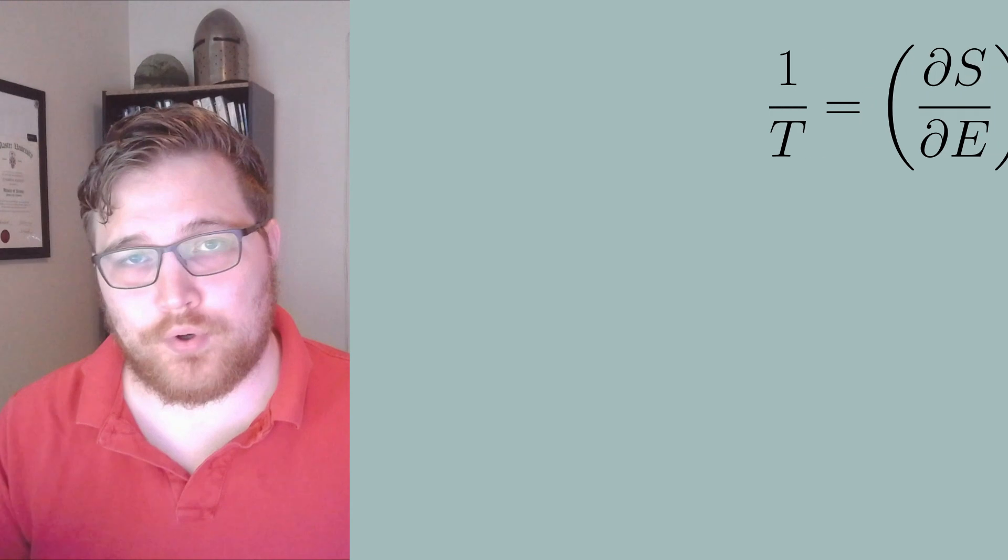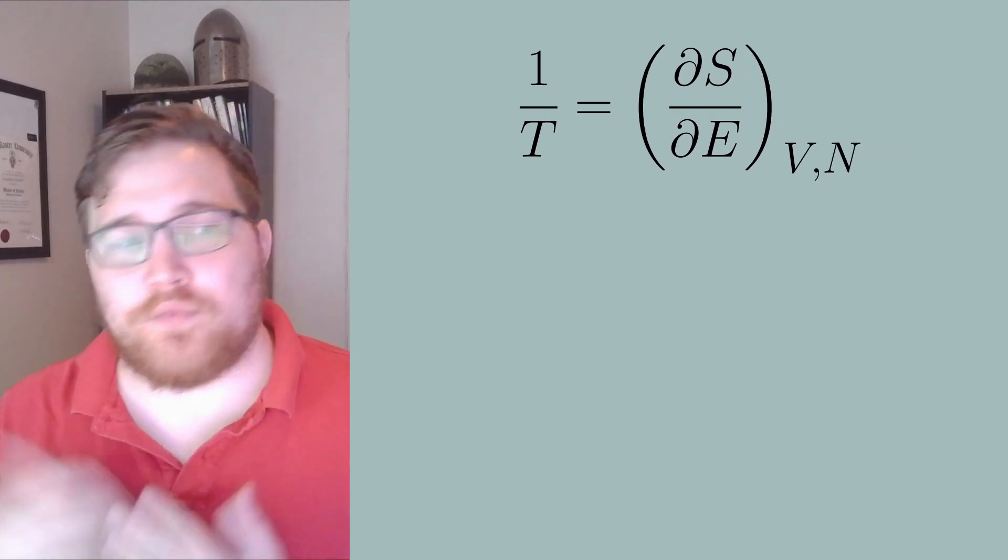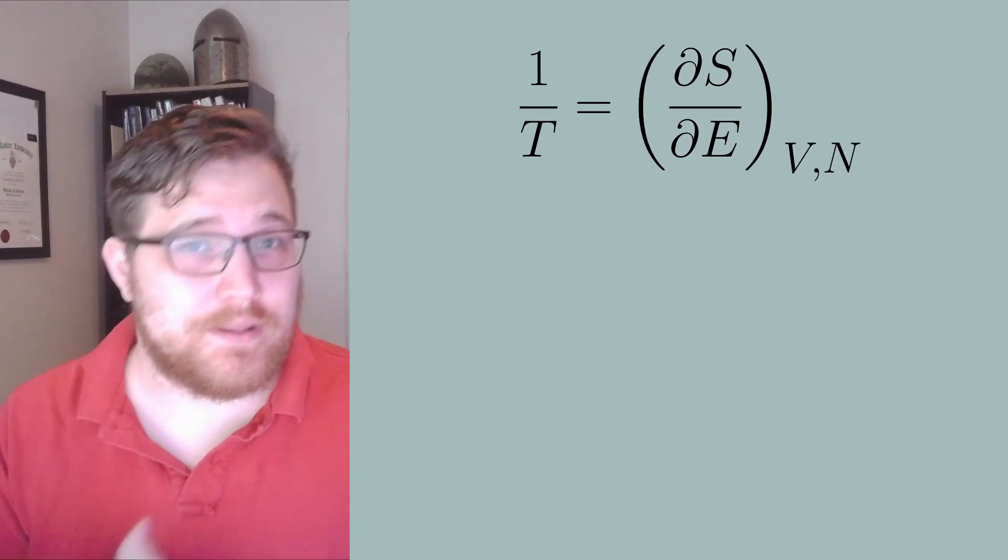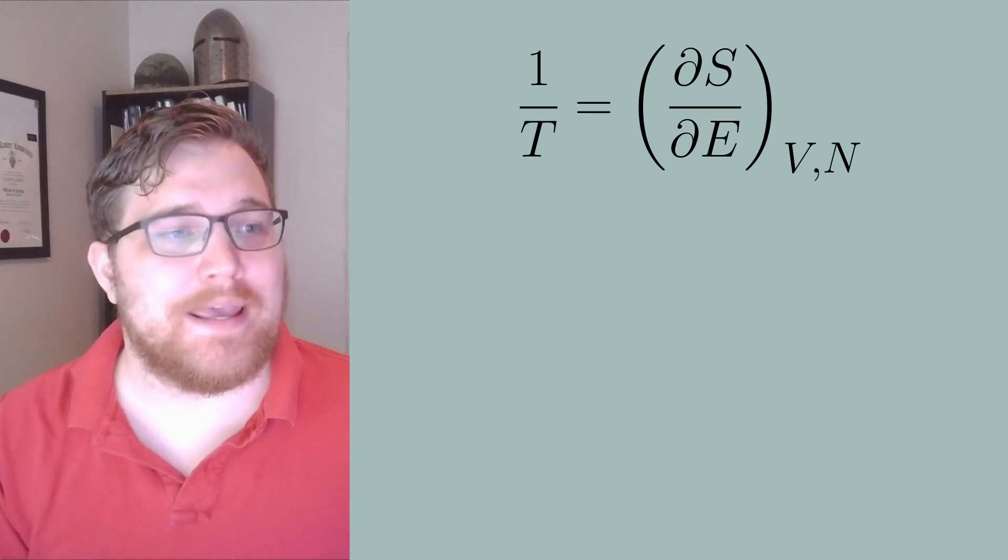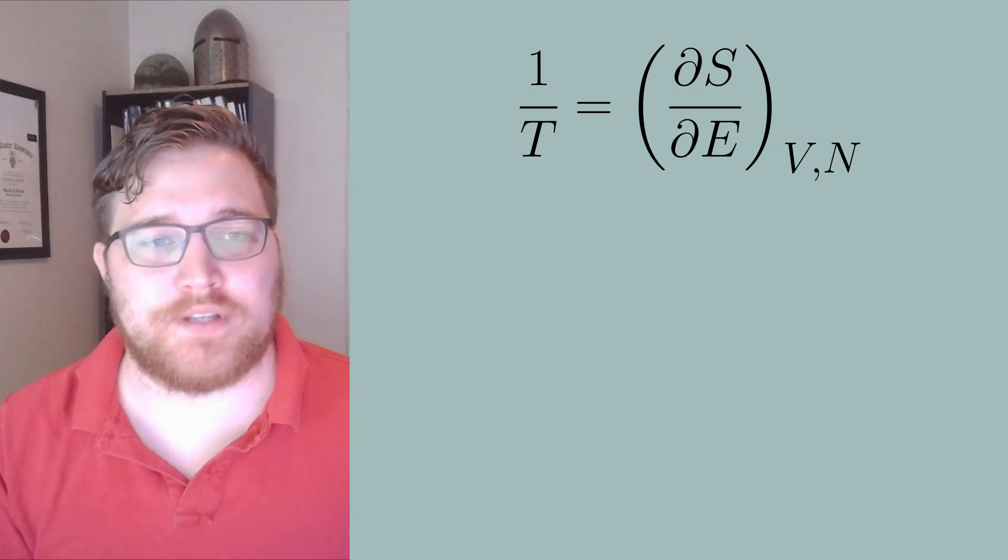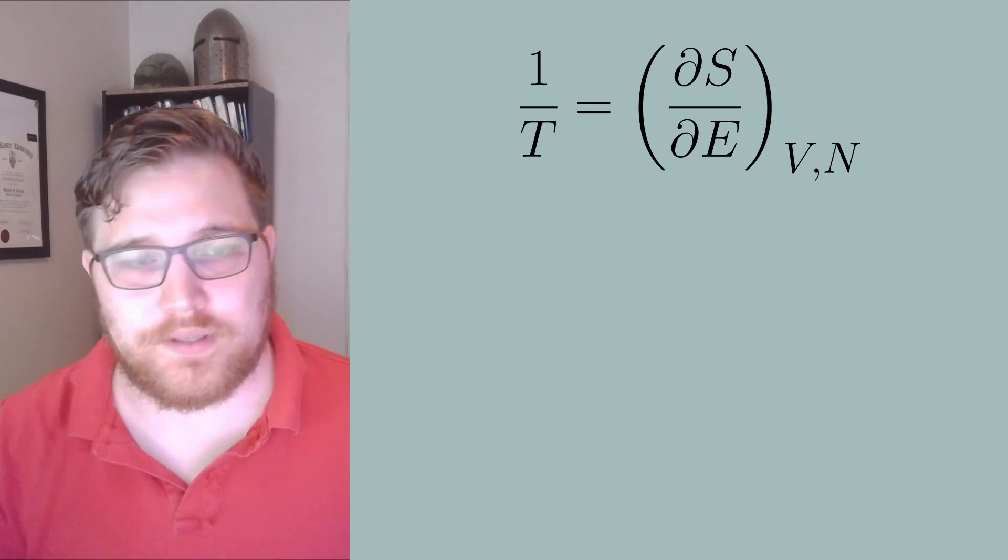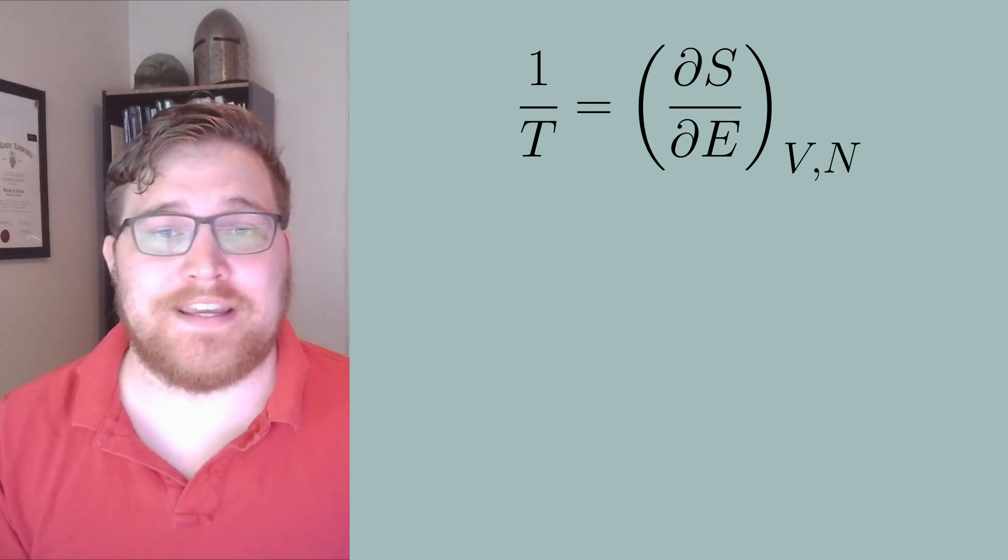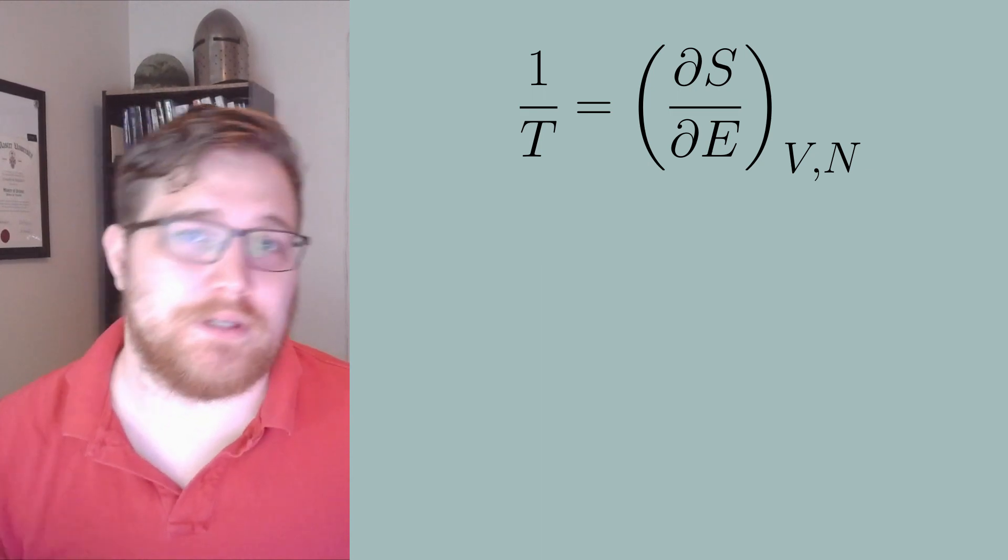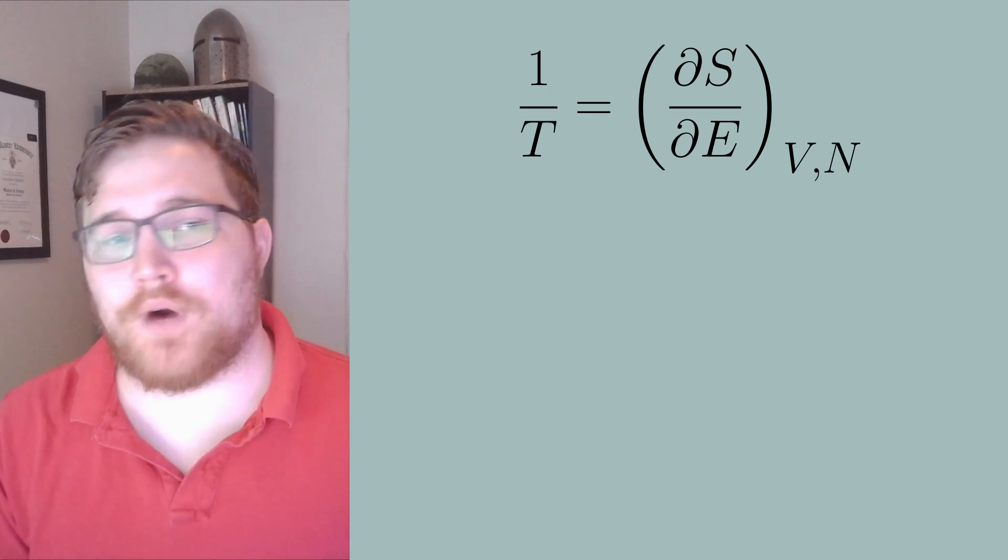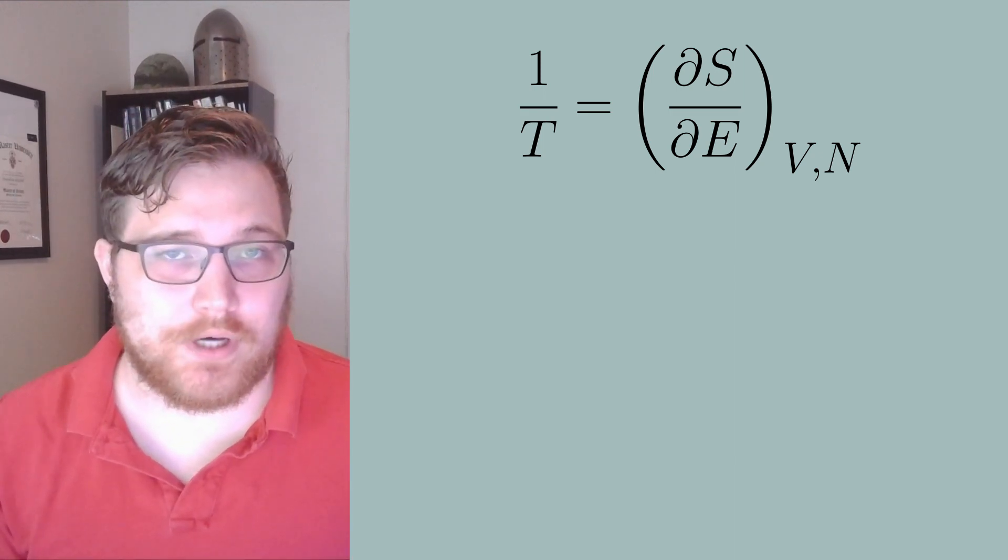Both sides define temperature in the usual thermodynamic way. Without referencing what we mean by S yet, the entropy, we see that the temperature will always be positive if by increasing the energy of our system we also increase the entropy. Contrary to this, if the entropy can decrease with respect to increasing energy, temperature will be negative. So let's quickly review our two competing definitions of entropy.